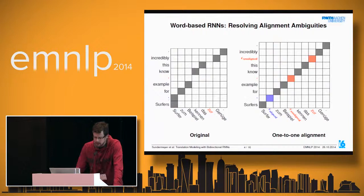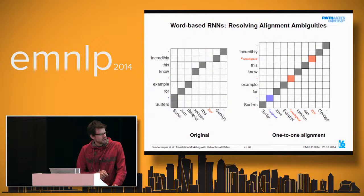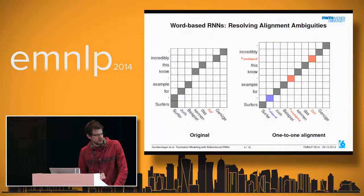Looking at an example output from the phrase-based decoder, there is a multiply-aligned source word. We handle this using an IBM Model 1 to decide which alignment point to keep—comparing the likelihood of the comma translating to 'surfer' versus 'surface' translating to 'surfer'. We keep the latter. The other alignment point is resolved by introducing an epsilon-aligned token into the source sentence, and these epsilon tokens become part of the vocabulary.